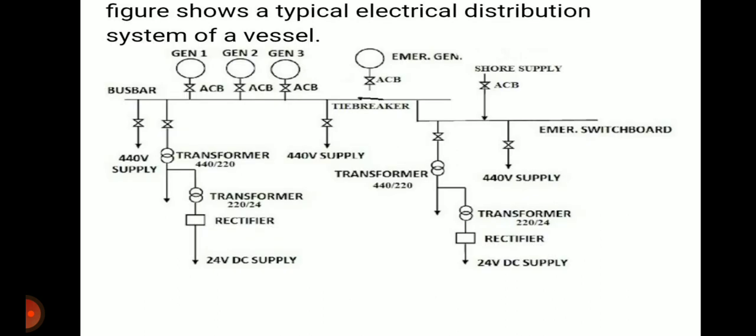In the typical diagram, three generators can be seen. Between each generator and the bus bar there is an ACB — air circuit breaker. From the bus bar, 450 volt supply goes out directly, then 220 volt via transformer, and 24 volt via transformer and rectifier for DC power supply. Shore supply lane and emergency generator lane with air circuit breakers are also visible.